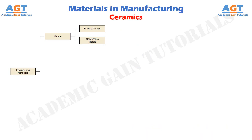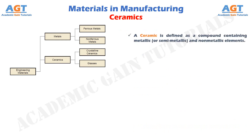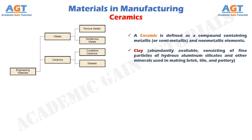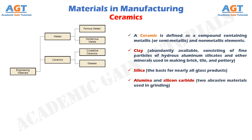A ceramic is defined as a compound containing metallic or semi-metallic and non-metallic elements. Typical non-metallic elements are oxygen, nitrogen, and carbon. Ceramics include a variety of traditional and modern materials. Traditional ceramics, some of which have been used for thousands of years, include clay — which is abundantly available, consisting of fine particles of hydrous aluminum silicates and other minerals used in making brick, tile, and pottery — silica, which is the basis for nearly all glass products, and alumina and silicon carbide, which are two abrasive materials used in grinding.